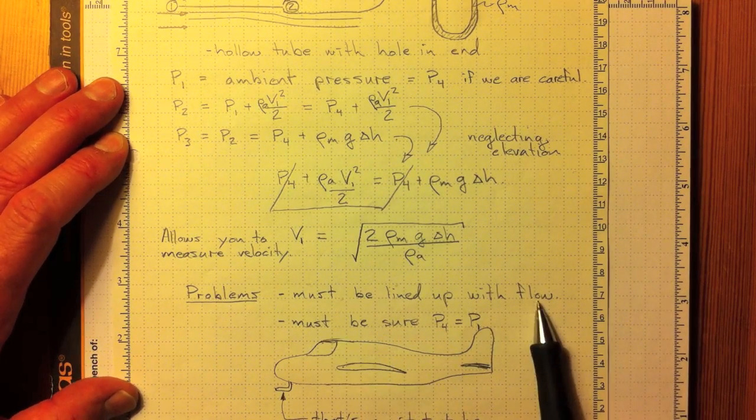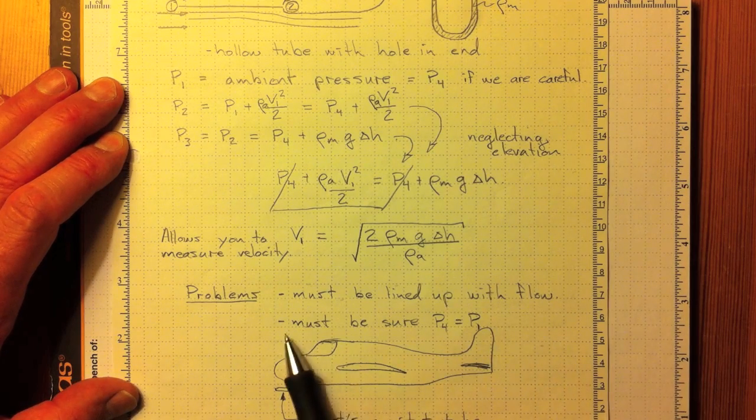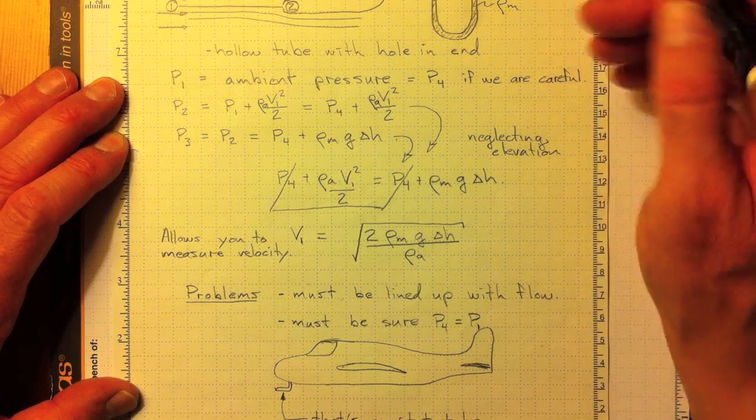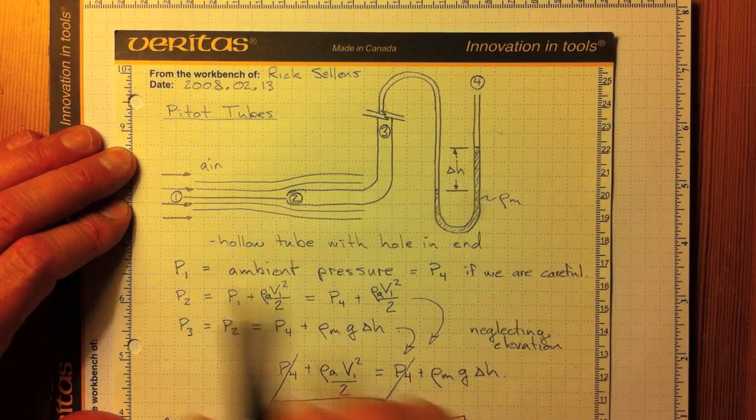Problems with using a pitot tube? It has to be lined up with the flow. The flow has to be coming straight on to it. And you must be sure that P4, that is whatever you're applying at the manometer here, is the same as P1.